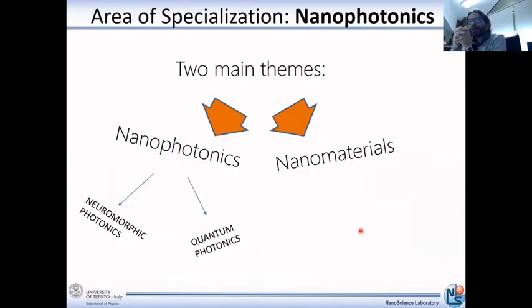The area of specialization nanophotonics covers from the research point of view essentially two main themes: nanophotonics and nanomaterial for photonics. In the nanophotonics trial we cover on one side neuromorphic photonics and on the other side quantum photonics. Now I give the floor to Professor Paolo Bettotti who will introduce neuromorphic photonics, and then Professor Stefano Anzini will tell you about quantum photonics.